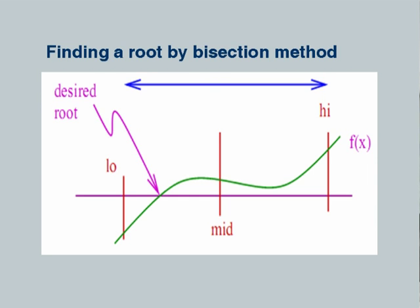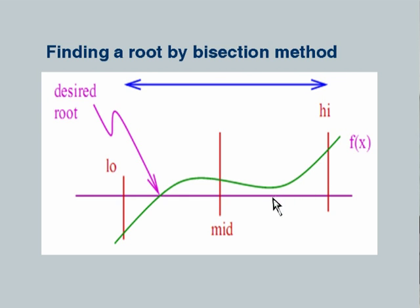Here is another computational example: finding a root by the bisection method. You are familiar with roots of an equation. Consider a function f(x) with some shape. We need to find at which point this function crosses the x-axis, because that is where f(x) equals zero — that is the desired root. We had earlier located roots using the Newton-Raphson method, but there is another simpler iteration method.